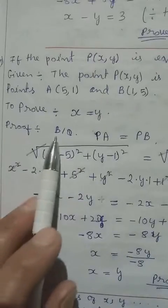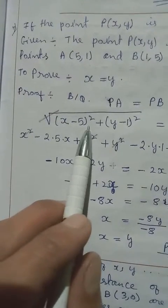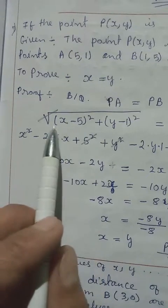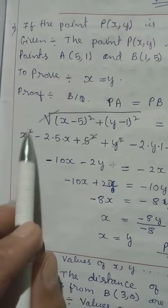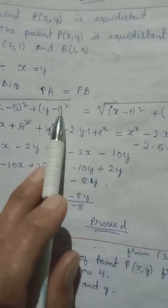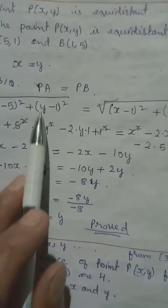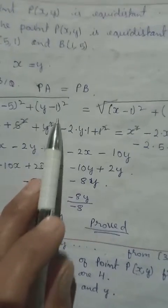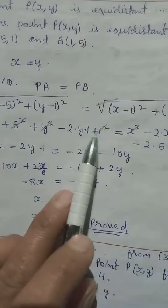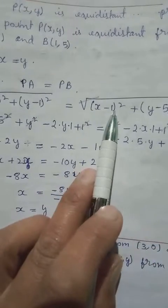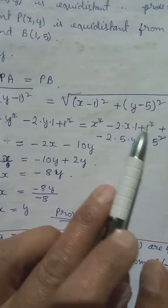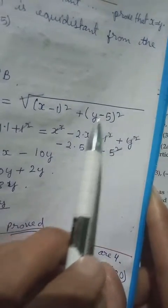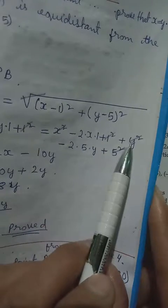Both sides are equal, so we cancel the square root. Expanding: for x minus 5, applying (a - b)² with a = x, b = 5, we get x squared minus 2ab plus b squared. For y minus 1, applying (a - b)² with a = y, b = 1, gives y squared minus 2 times 1 times y plus 1. On the right side, for x minus 1, same formula gives x squared minus 2ab plus b squared. For y minus 5, same formula gives y squared minus 2ab plus b squared.